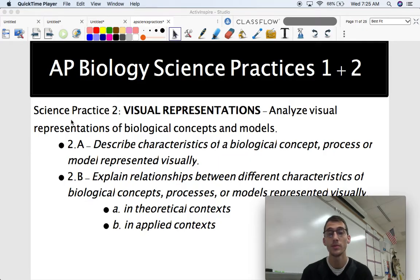2.B is explaining relationships between different characteristics of biological concepts, processes, or models represented visually. And again, if this is looking familiar, it's because it is. It's the same as 1.B and 1.C, except these are visual representations. So it's going to be like a drawing or a graph, something like that. And there's two sub-points here that you're going to have to explain relationships between characteristics, so on and so forth, in theoretical context and in applied context. So there might be some kind of example or some kind of experiment and a graph or a visual that goes along with it that they're going to be asking you to explain.